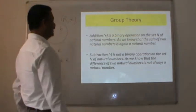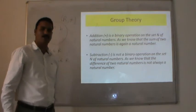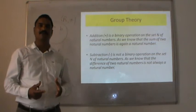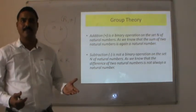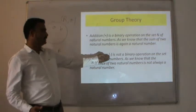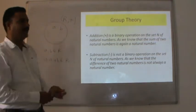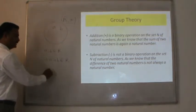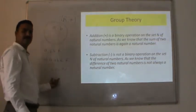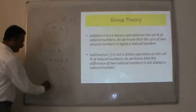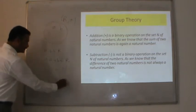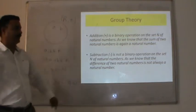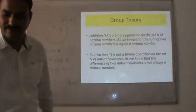A few more examples of binary operations: addition is a binary operation over the set of natural numbers, as the sum of two natural numbers is again a natural number. Unfortunately, subtraction is not a binary operation on natural numbers, because if we choose two elements like 2 and 3 from the set of natural numbers, then 2 minus 3 produces minus 1, which does not belong to N. This shows subtraction is not a binary operation on the set of natural numbers.